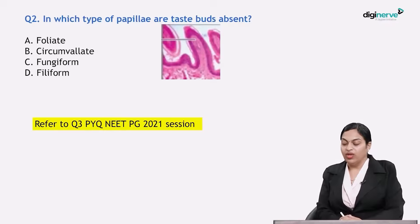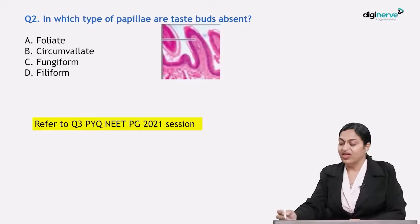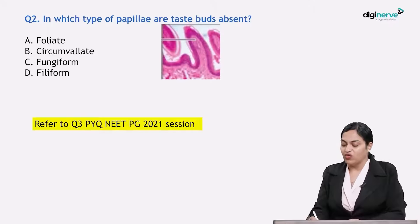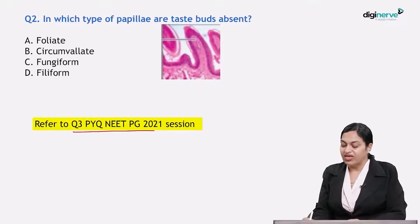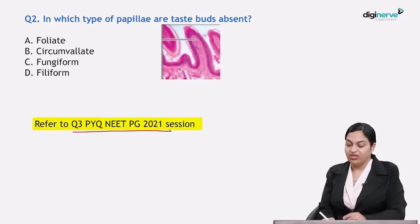Question number 2: in which type of papilla are taste buds absent? This is a very frequently asked topic — we have discussed it in detail in NEAT PG 2021 question number 3.